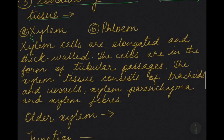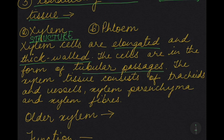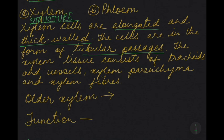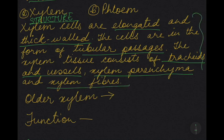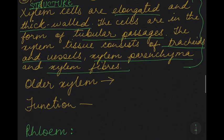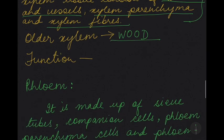The structure of xylem: xylem cells are elongated with a thick wall, and the cells are in the form of tubular passages like a pipe, so that water can move in the upward direction. The xylem tissue consists of different types of cells known as tracheids and vessels, xylem parenchyma and xylem fibers. Older xylem is known as wood — as xylem becomes older and harder, it is known as wood.